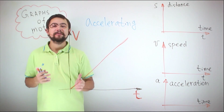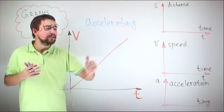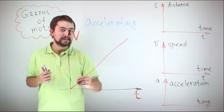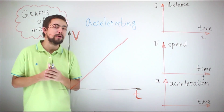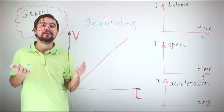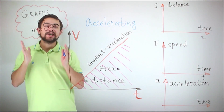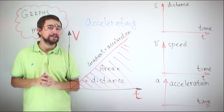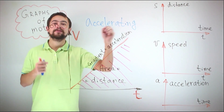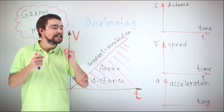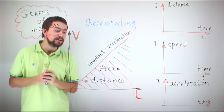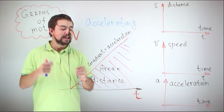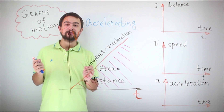This is a graph for an accelerating body — we see the speed is increasing, so the body is accelerating. The speed-time graph has two very important features: the gradient of the graph is equal to the acceleration of the body, and the area under the graph is equal to the distance traveled.